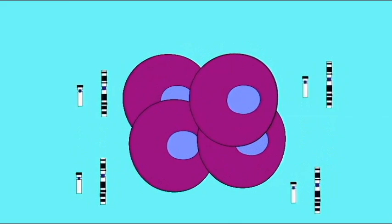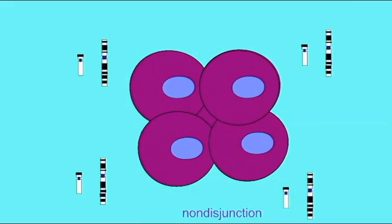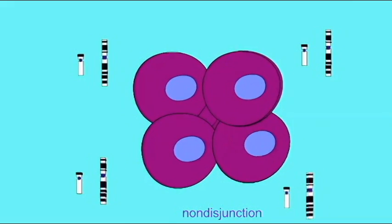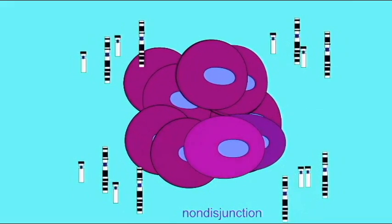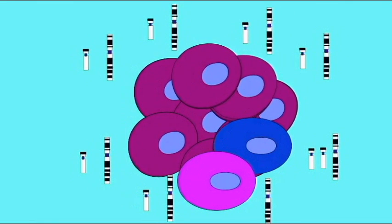Thus, the effects of a non-disjunction will vary from case to case depending on when this non-disjunction occurs, and the resulting embryo is a mosaic. Not all of the cells are identical.